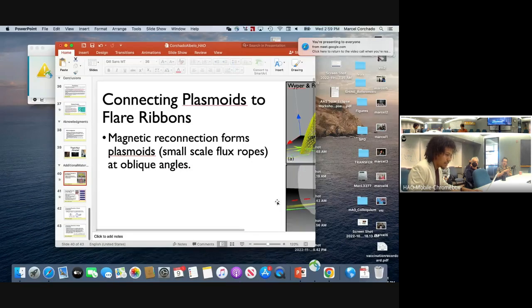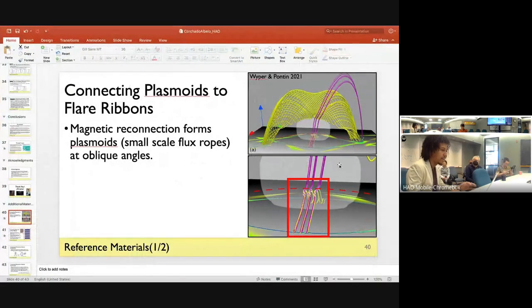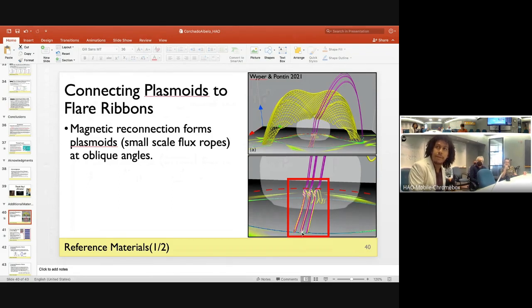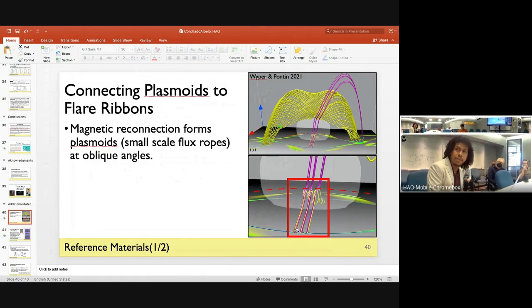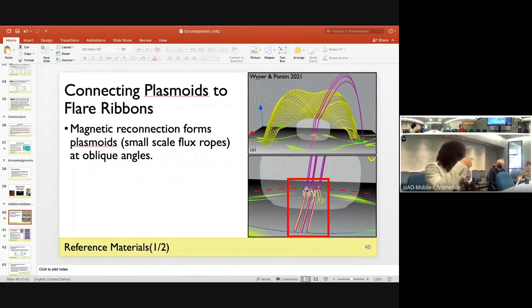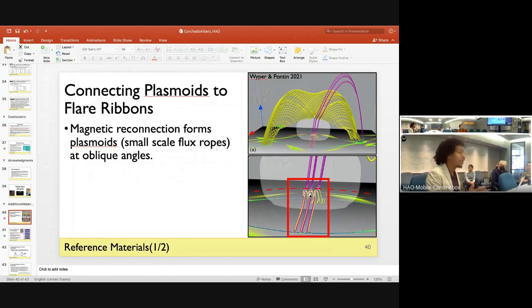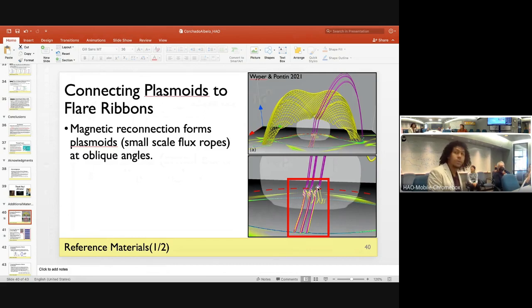On this paper by Wyper et al. in 2021, they've actually traced the fine structures, which I think is the best result we have right now. You have the swirls in the flare ribbon and they connect to these plasma structures - this is what we mean by plasmoid, small scale flux ropes and the current sheet. That's the working function for us right now. We don't get that from our data of course, but the idea is that these finer structure details like swirls actually correspond to those. Joel Dahlin is here and he has some work in progress on this as well.